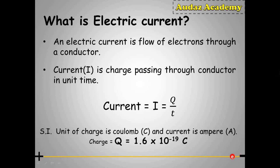The SI unit of charge is coulomb whose symbol is capital C and current is ampere which is capital A. The charge on an electron is given by 1.6 into 10 raised to minus 19 coulomb.